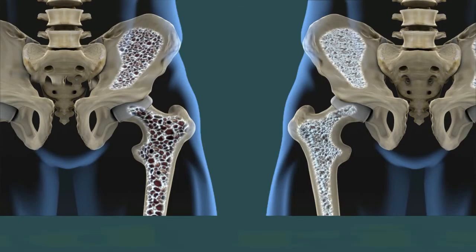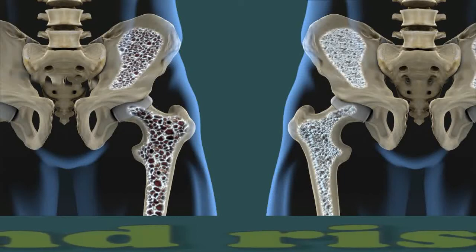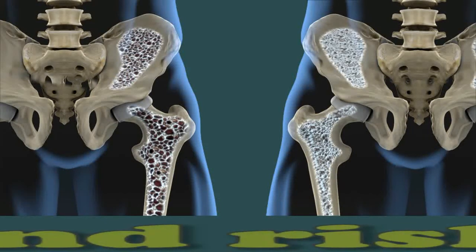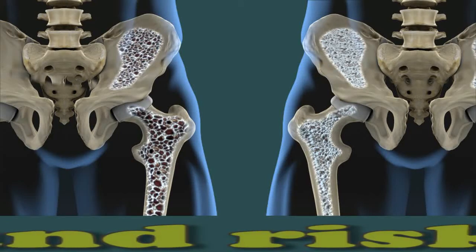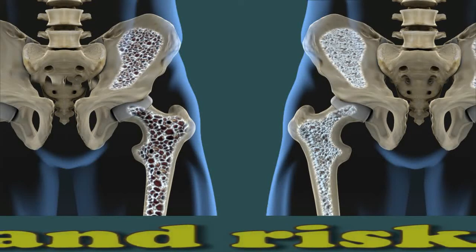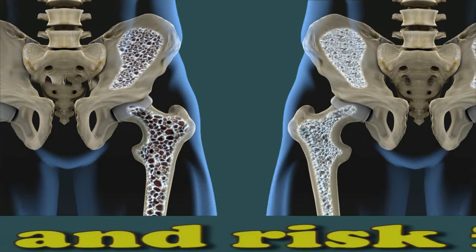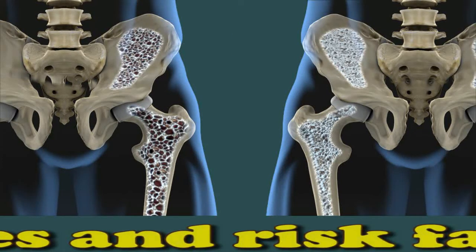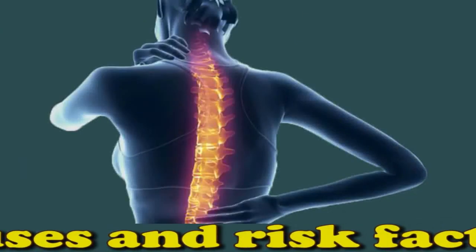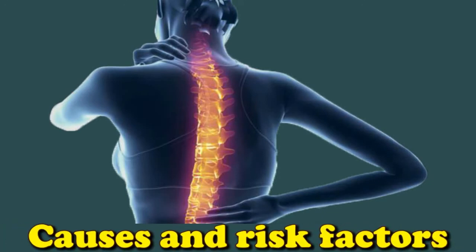Doctors have identified several risk factors for osteoporosis. Some are modifiable, but it is not possible to avoid others. The body continually absorbs old bone tissue and generates new bone to maintain bone density, strength, and structural integrity. Bone density peaks when a person is in their late twenties and starts to weaken at around 35 years of age.